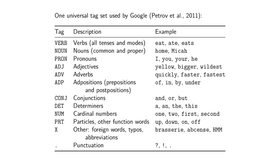You have things like verbs: eat, ate, eats; nouns: home, my, car. Proper nouns in this specific tag set are grouped just with nouns, so you don't label proper nouns separately. You've got pronouns: are, you, your, he, they; adjectives: bigger, wilder; adverbs: quickly, faster; adpositions, which are prepositions and postpositions: of, in, by, under; conjunctions: and, or, but; determiners: a, the, this; and cardinal numbers and so on.